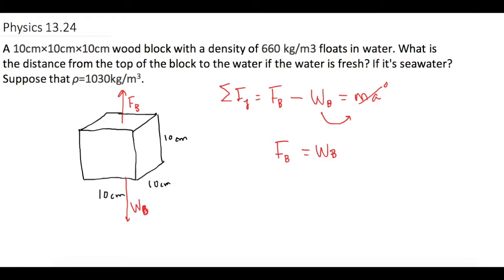If the buoyant force was more, then it would float and rise even higher. If the weight was more, it would sink into the water. So since it's floating stationary, not moving, they have to be equal to each other. Now let's plug in the values for these two. We know that buoyant force is ρ times g times the volume of the water that it's displacing. And then the weight of the block is equal to ρ times gravity times the total volume of the block.